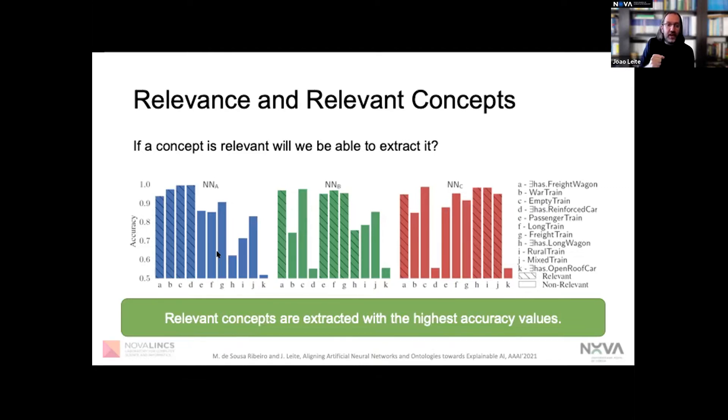Our experiments show that we're typically able to extract concepts that are ontologically relevant to the output of the neural network with fewer examples and achieving higher accuracy than non-relevant concepts. It means that if we try to actually map relevant concepts from the neural network, it's easy. If we were trying to map concepts which make no sense or play no role in that classification, then it turns out to be hard.